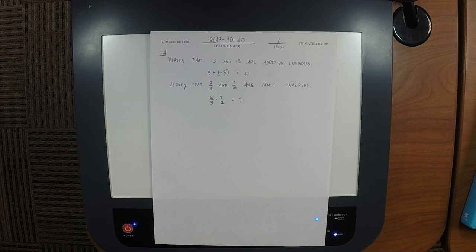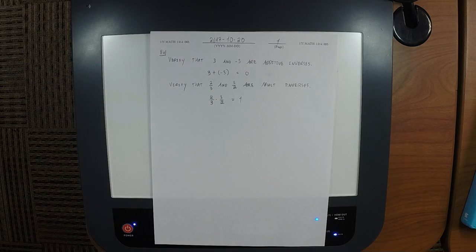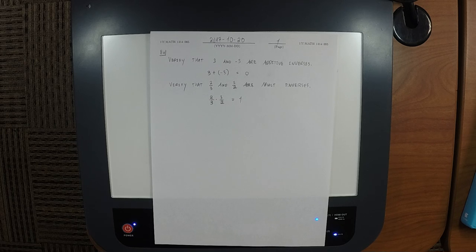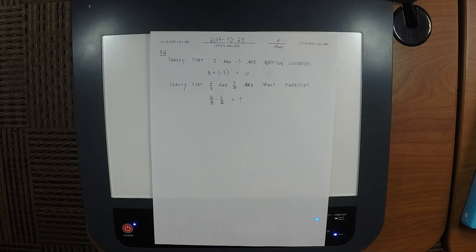Just like 3 and negative 3 are additive inverses because when you add them you get the additive identity, and 2/3 and 3/2 are multiplicative inverses because when you multiply them you get the multiplicative identity — now we want the exact same structure but with composition. We want to take two functions and ask: are these two functions compositional inverses? To confirm or deny that, we'll compose them and see if we get the compositional identity.